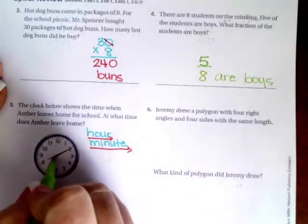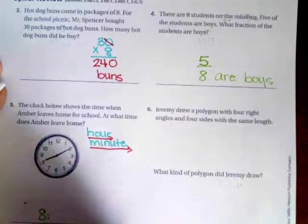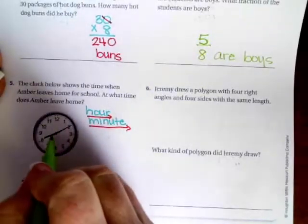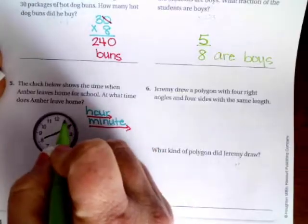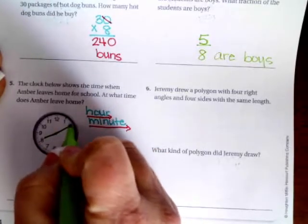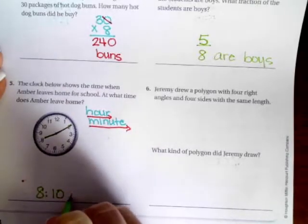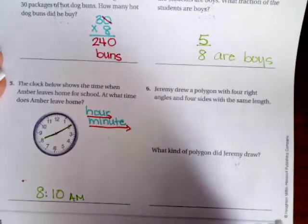We're going to go ahead and the shorthand is pointed just past eight. So it's eight right there. And then the minute hand is pointing to the two. And since we count by fives, it's going to be five, 10, eight, 10. And I would guess that would be am leaving for school.